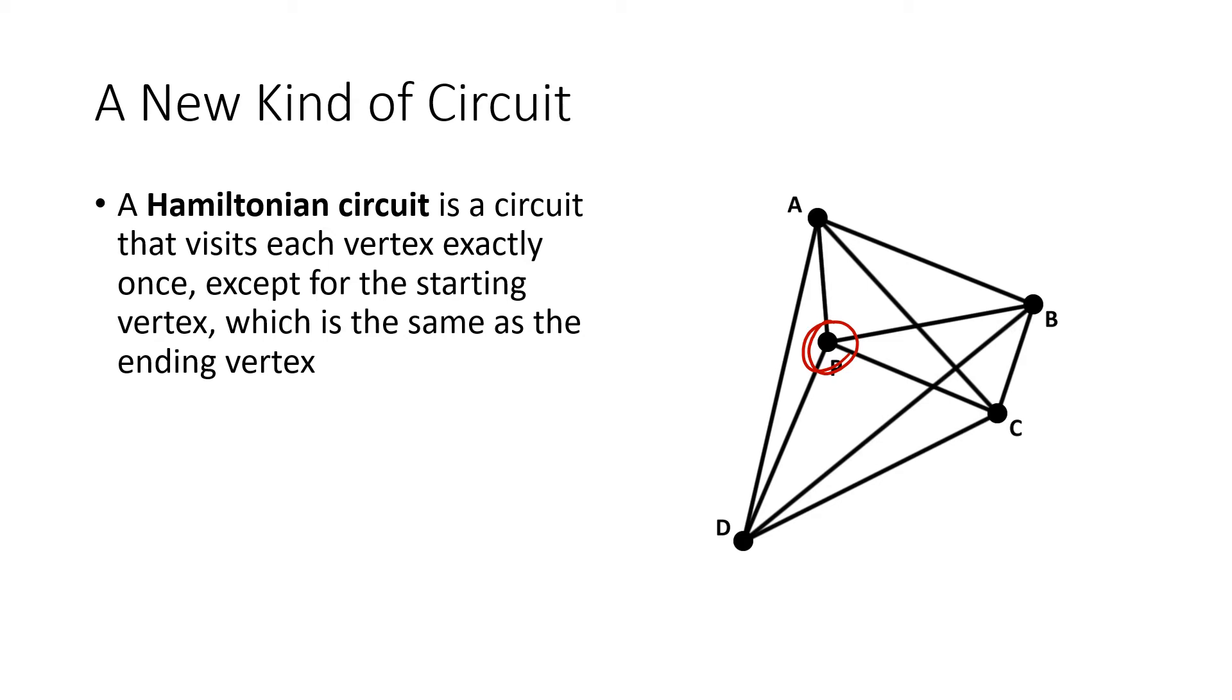So one example of a Hamiltonian circuit here would be to go from P to A, from A to C, from C to D, from D to B, and then from B back to the post office. So notice that there's many edges that we didn't walk along, but we visited every vertex exactly once, except for the first vertex, which we visited twice, once at the beginning and once at the end.